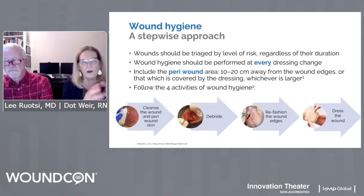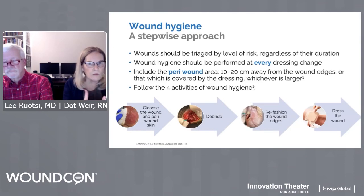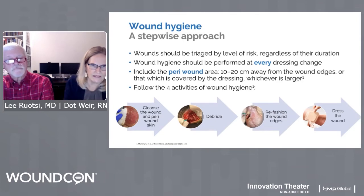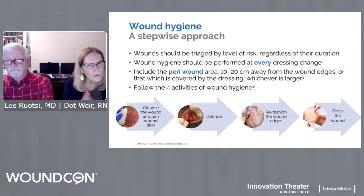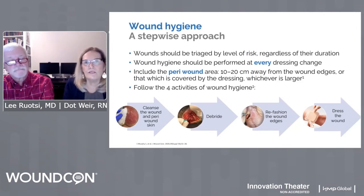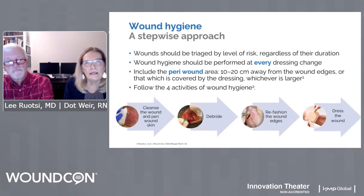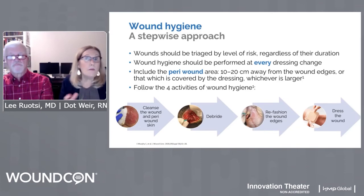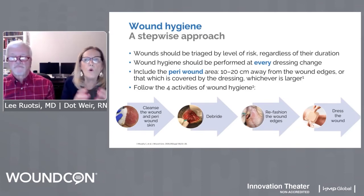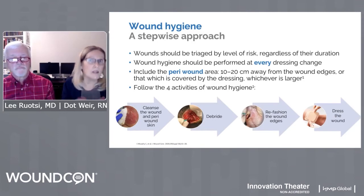The wound hygiene pillars are: cleansing the wound, debriding the wound, watching the wound edges and refashioning them if needed, and then treating with an appropriate dressing. We have to rethink this every time we see the patient because these wounds are dynamic. What came out in this paper is the importance of cleaning not only the wound bed, but also the peri-wound area — about 10 to 20 centimeters around the wound, or at least where the dressing was sitting, whichever is larger.